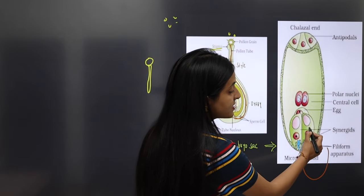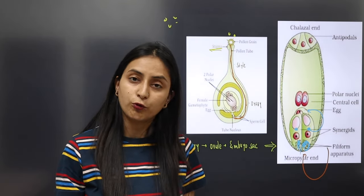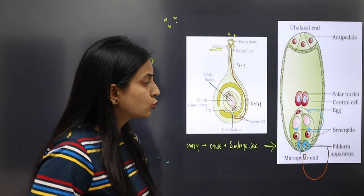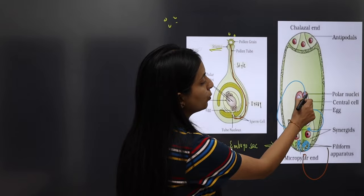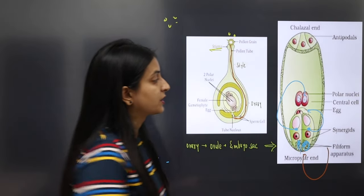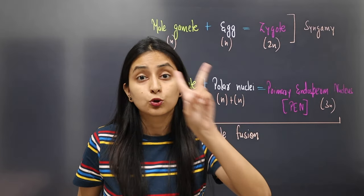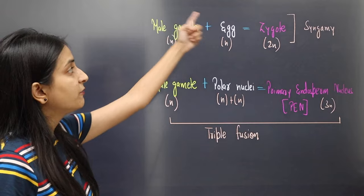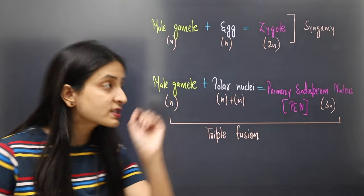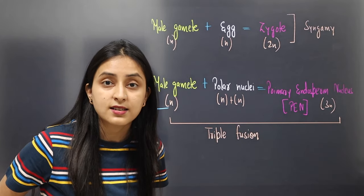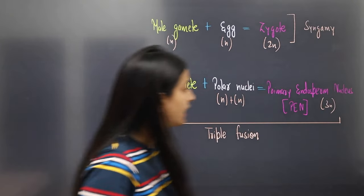These two male gametes are released. One male gamete fuses with the egg cell to form a zygote - this is called syngamy or fertilization. The second male gamete fuses with the two polar nuclei of the central cell, forming a structure called the primary endosperm nucleus. Male gametes are haploid (N), so the zygote becomes 2N. The second male gamete (N) fuses with two polar nuclei (N + N = 2N), giving 2N + N = 3N.